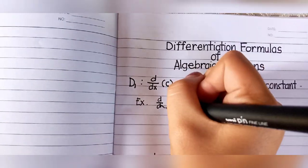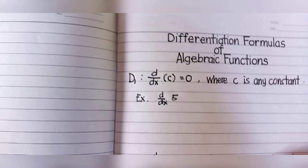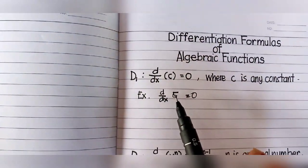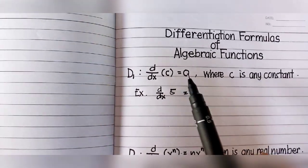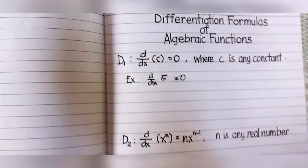For example, d/dx of 5 equals 0, where 5 is the constant. Any constant, the derivative of that is always 0.